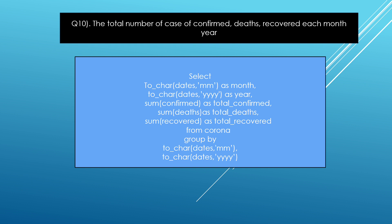The next question is: find the total number of confirmed, deaths, and recovered cases each month and year. Basically I used SUM functions. I used MONTH(dates) as month, YEAR(dates) as year, SUM(confirmed), SUM(dates), and SUM(recovered) from corona, grouped using GROUP BY.